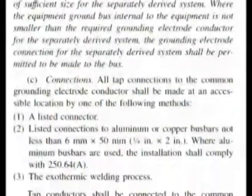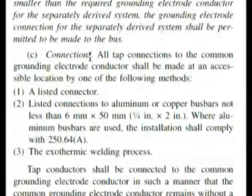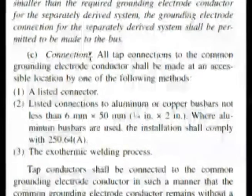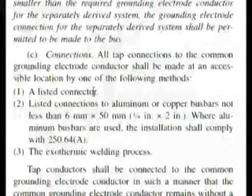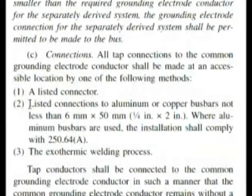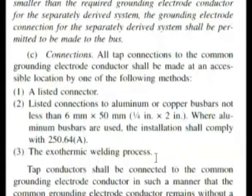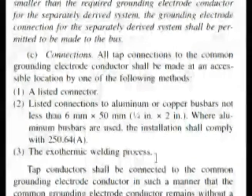Section C says: Connections. Our question was asking us about how to make the connection. A — a listed connector. That's on there. Our second choice — listed connections to aluminum or copper bus bars. The code gives specifications, but our answer just asked if it was aluminum or copper. And our other choice — exothermic welding process. All three of these were given as possible answers, and of course choice D was any of these. So the answer, of course, is choice D — any of these. My experience would have paid off and I would have got this question right very quickly.